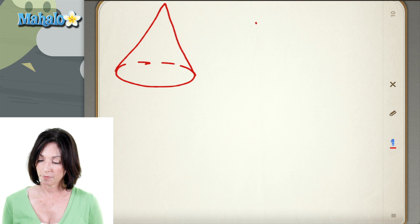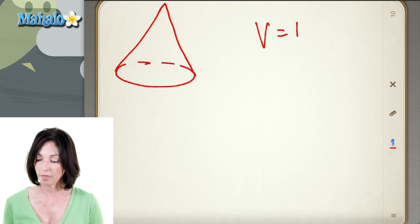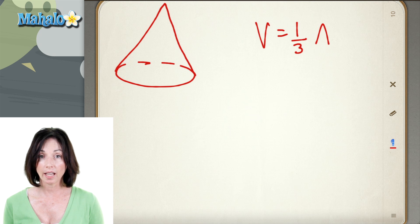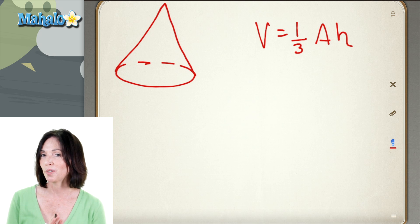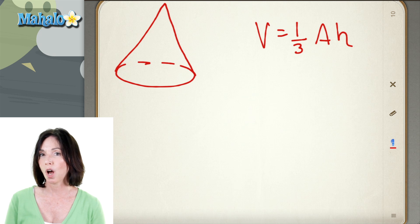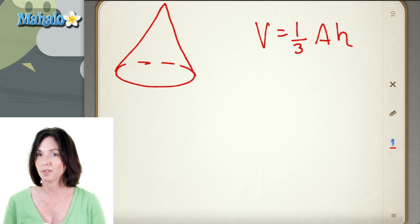So this is the formula. The volume is equal to one-third the area of the base multiplied by the height. Now it's really important that you remember that one-third goes in there when you're finding the volume of a cone, because the formula looks very much like the volume of a cylinder, but that one-third is the thing that makes the difference.